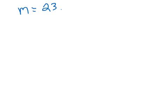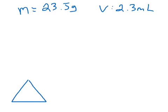The first question asks you to calculate density if you have a mass of 23.5 grams and a volume of 2.3 milliliters. From our triangle — we know that we have volume, density, and mass. So if we were solving for the density, the density is the mass over the volume. The equation I'm going to be using is: density is equal to the mass over the volume.